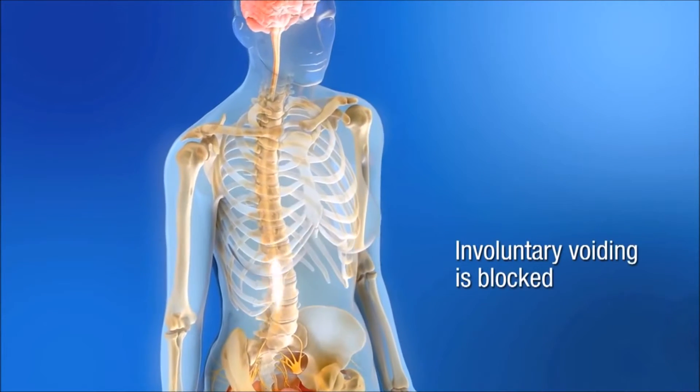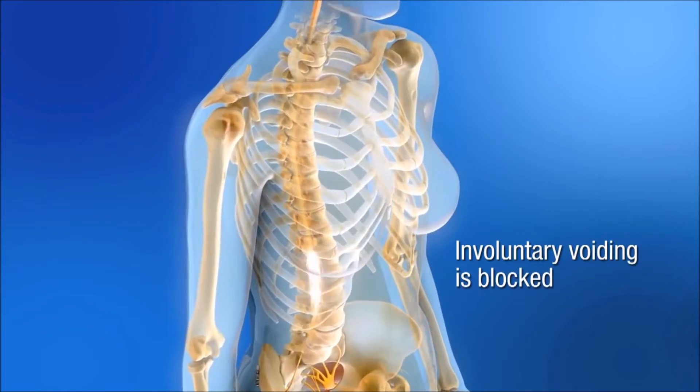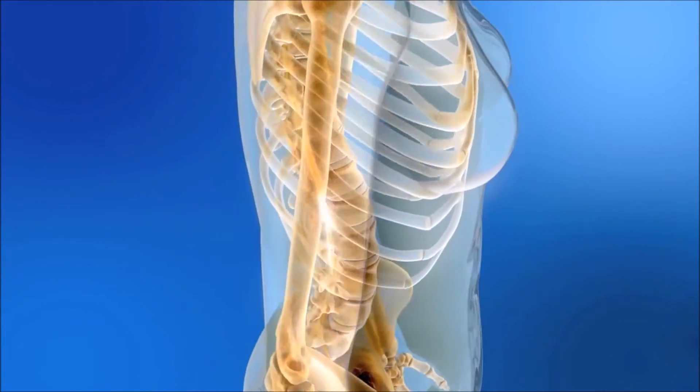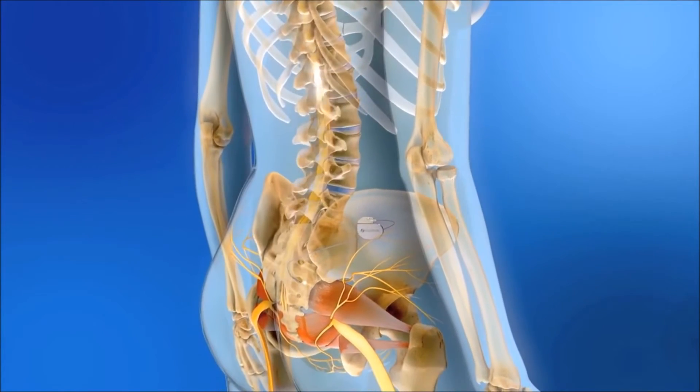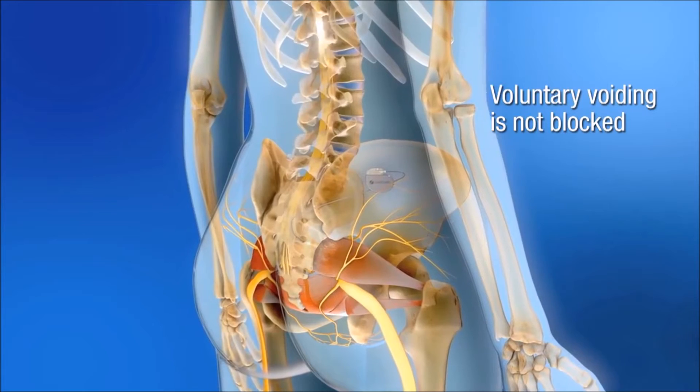This suggests that sacral neuromodulation patients experience normalized sensory signaling to the control centers of the brain, while motor pathways are uninhibited so as not to suppress voluntary voiding.